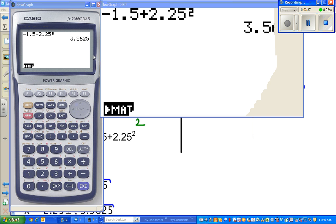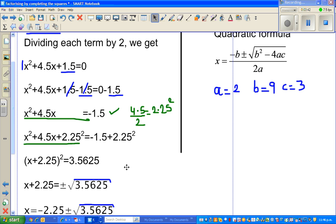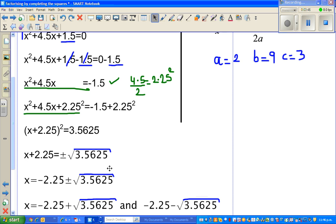The next step: if you remove the square from this side, you have to take the ± square root of this number, which is ± √3.5625.